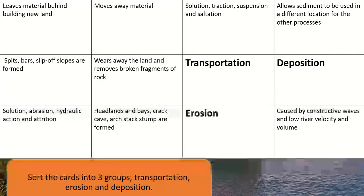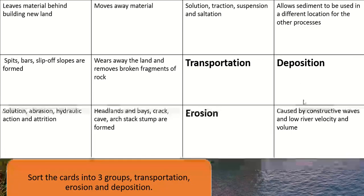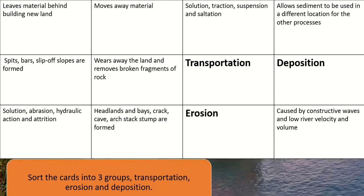Right, a little task for you — a card sort. Obviously I don't want you to print this off as it'll be near impossible, but you've got four headings in bold. Transportation and erosion we've looked at; deposition will be the ones that are left. Try to sort those cards into whichever section they fit in, so you end up with a table of three headings with information underneath. Pause the video, read through each card, and see if you can fit it into a category — should take about five minutes.